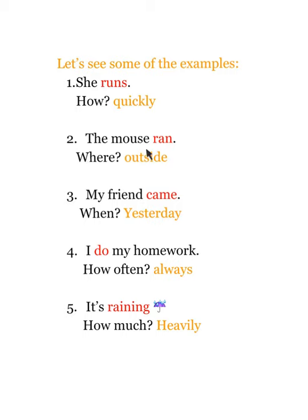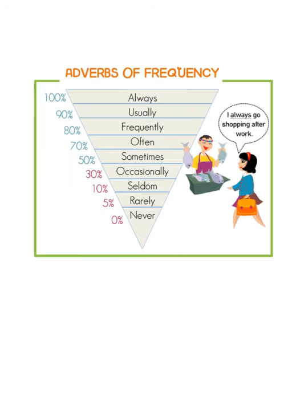Third: 'My friend came yesterday.' 'Came' is the verb, and 'yesterday' describes when. Fourth: 'I always do my homework.' 'Do' is the verb, and 'always' describes how often. Fifth: 'It's raining heavily.' 'Raining' is the verb, and 'heavily' describes how much.